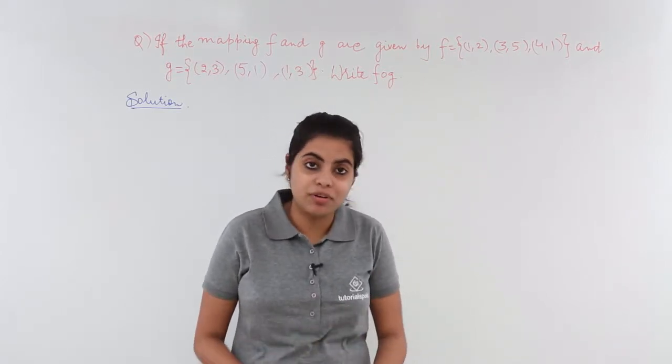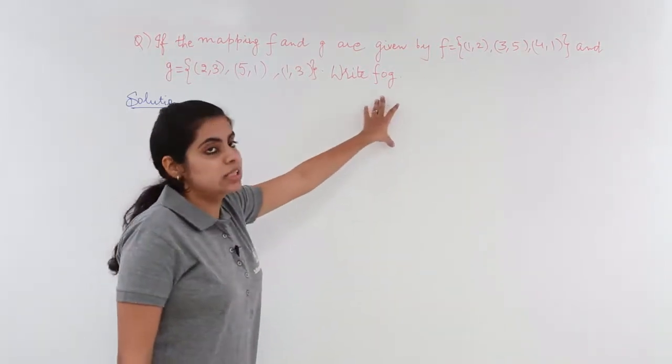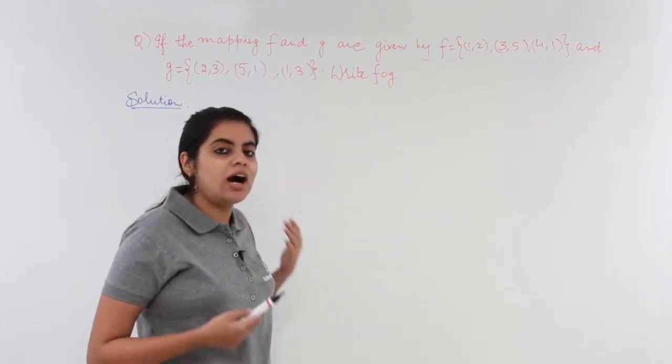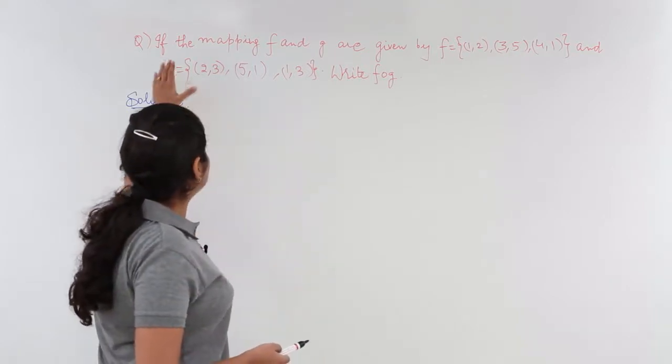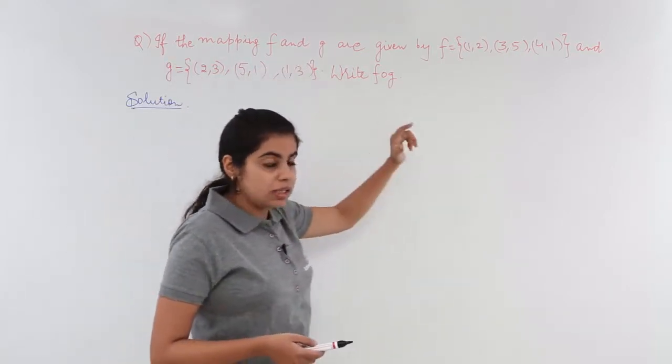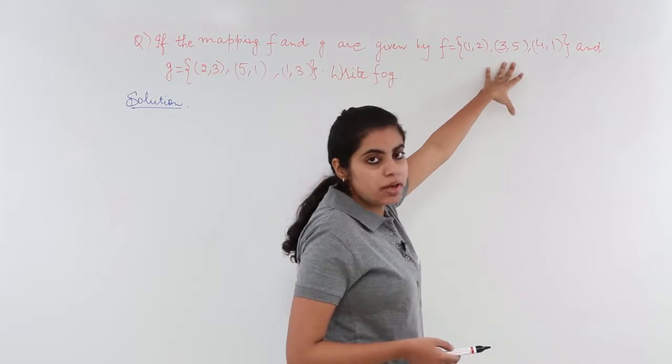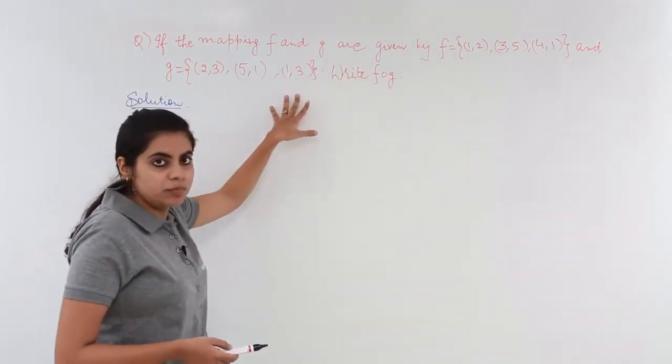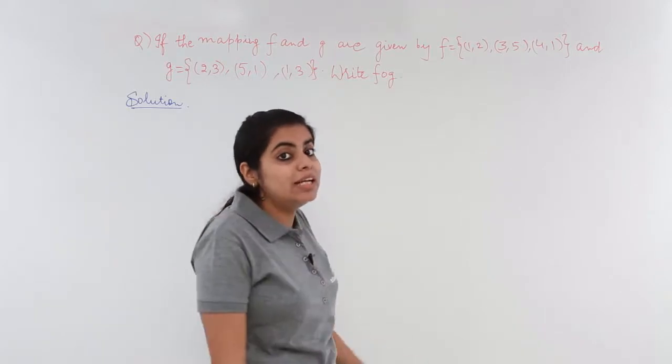We have to find FOG and some information is given to us. If the mapping F and G are given by function F is given such this way and G is given here, write FOG.